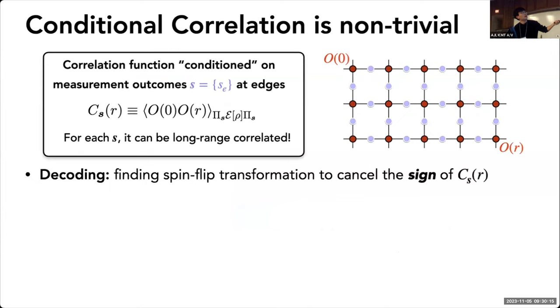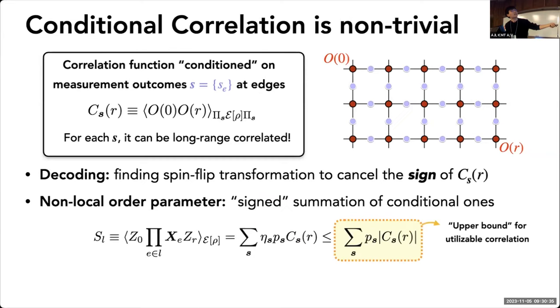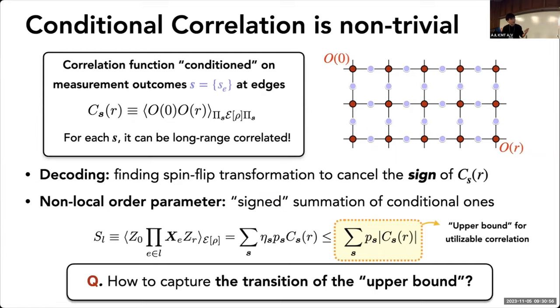When you measure all the even sites, you get some correlation function for the remaining red qubits. When you measure all the remaining qubits, these red sites can have non-trivial correlation and sign structure. Although it's paramagnetic, their sign structure doesn't have to be all plus one—it can be plus, minus, plus, minus. What I can show is our string order parameter is like a sign sum of this conditional correlation. So what determines our capacity to convert short-range entangled state into long-range entangled state is this upper bound—the norm of this conditional correlation function averaged over all possible measurement options.